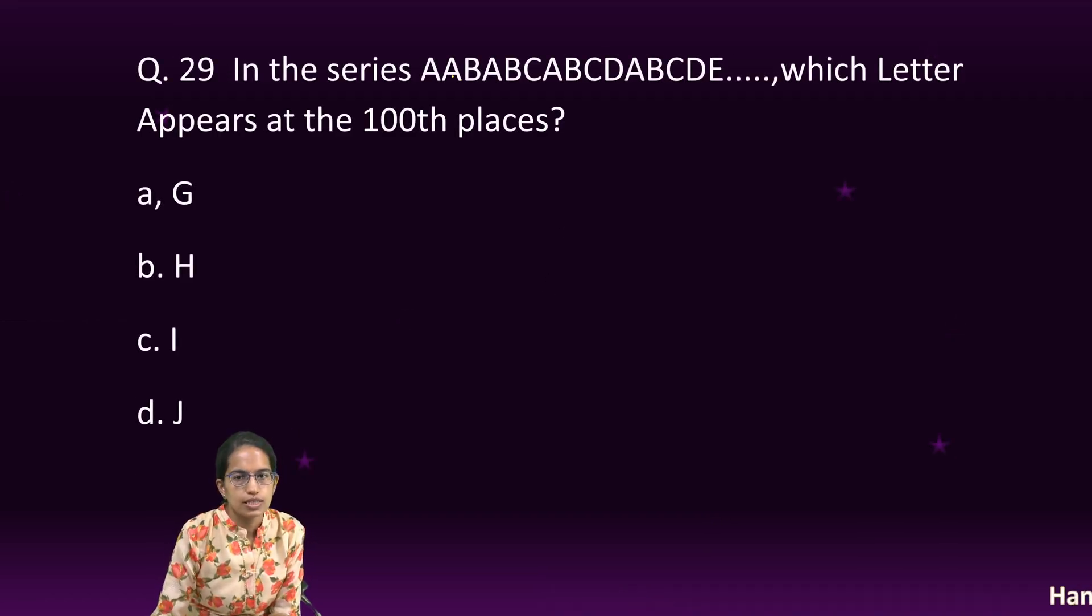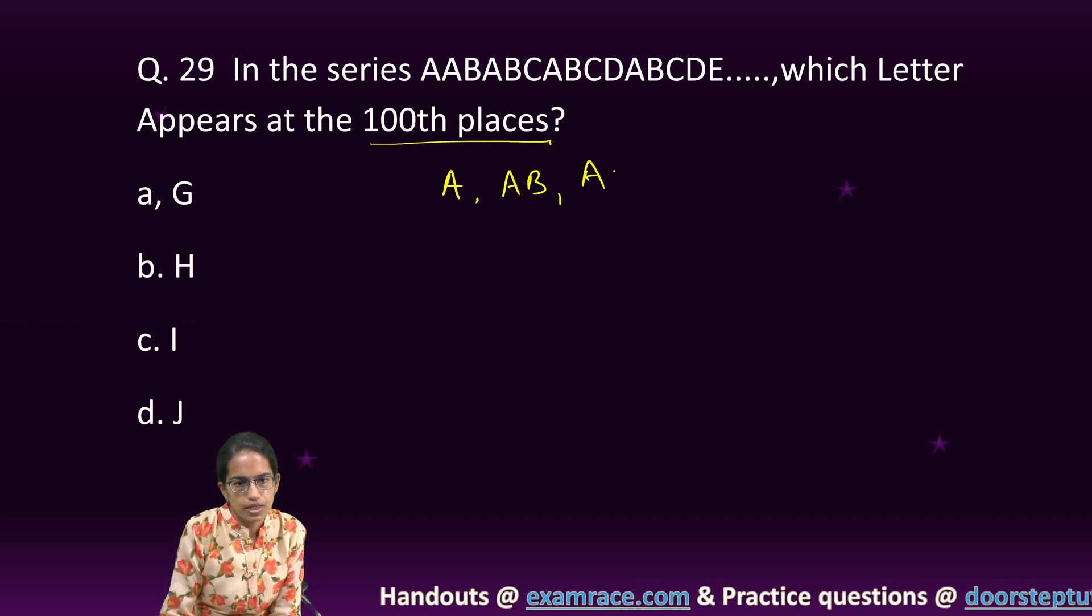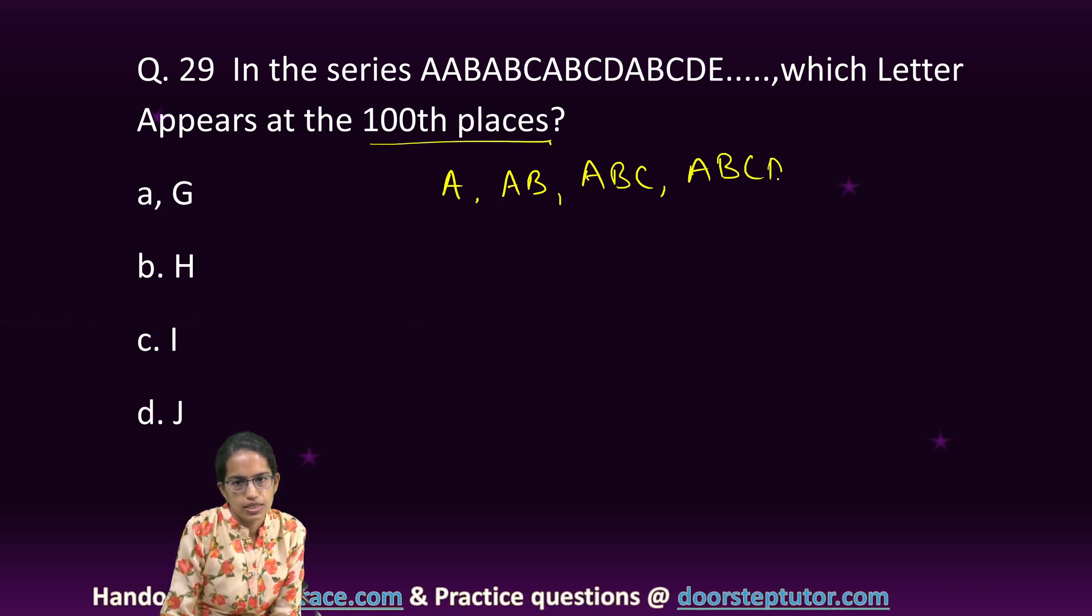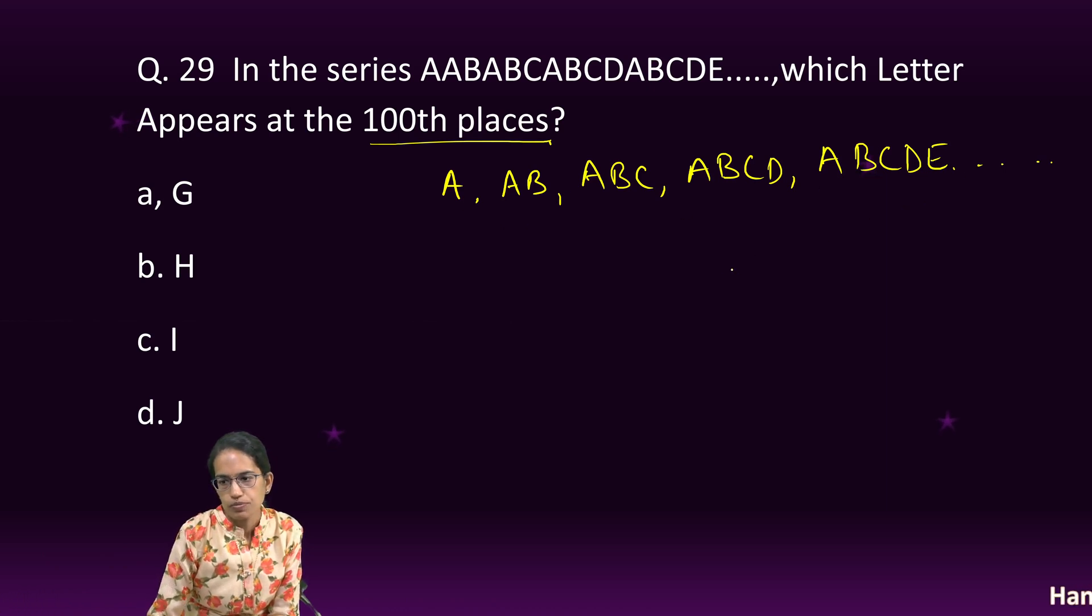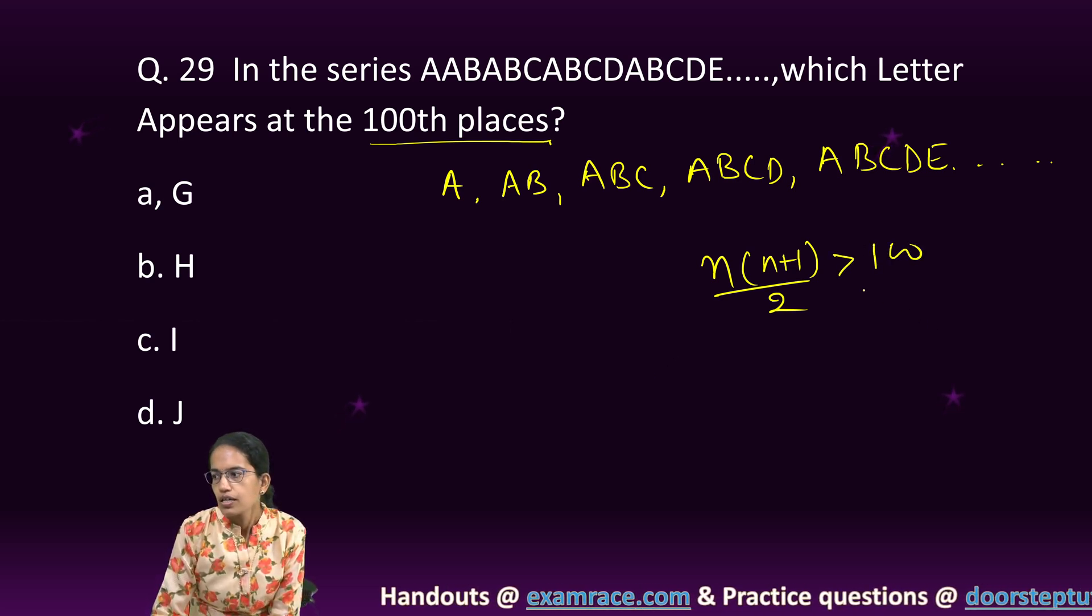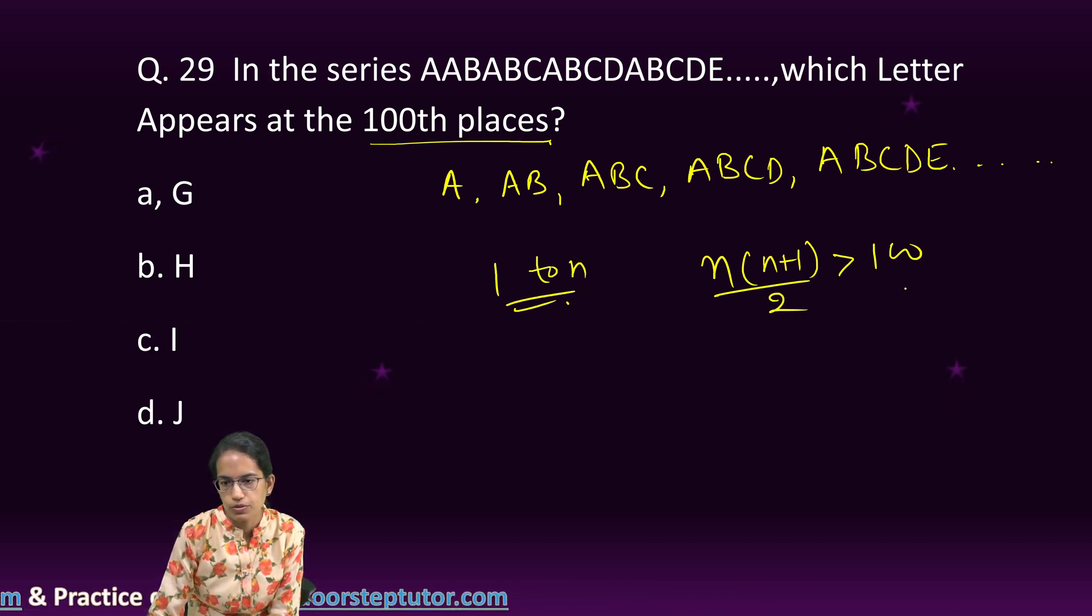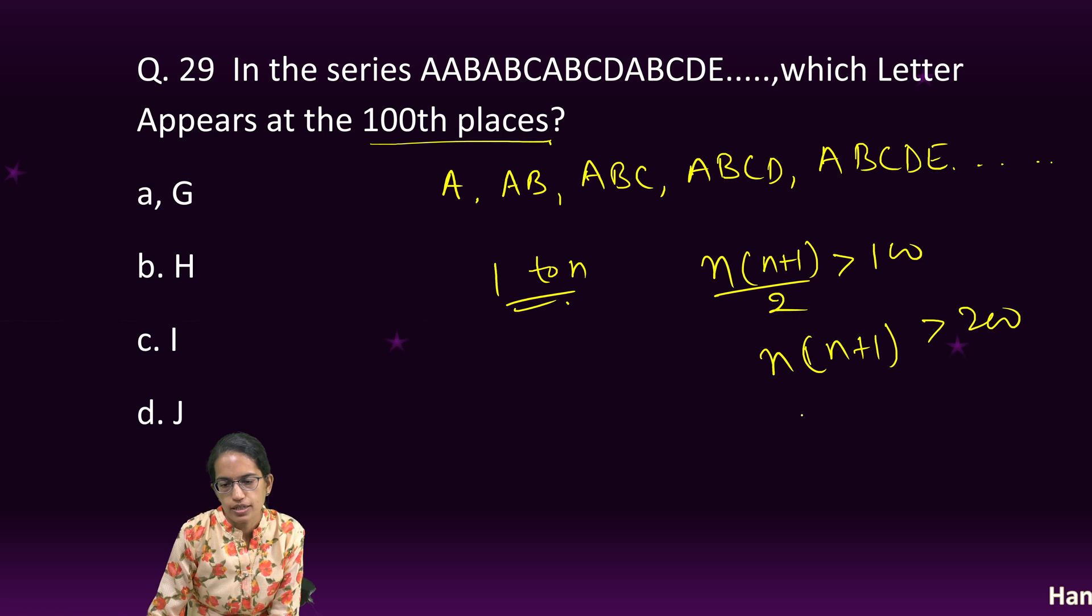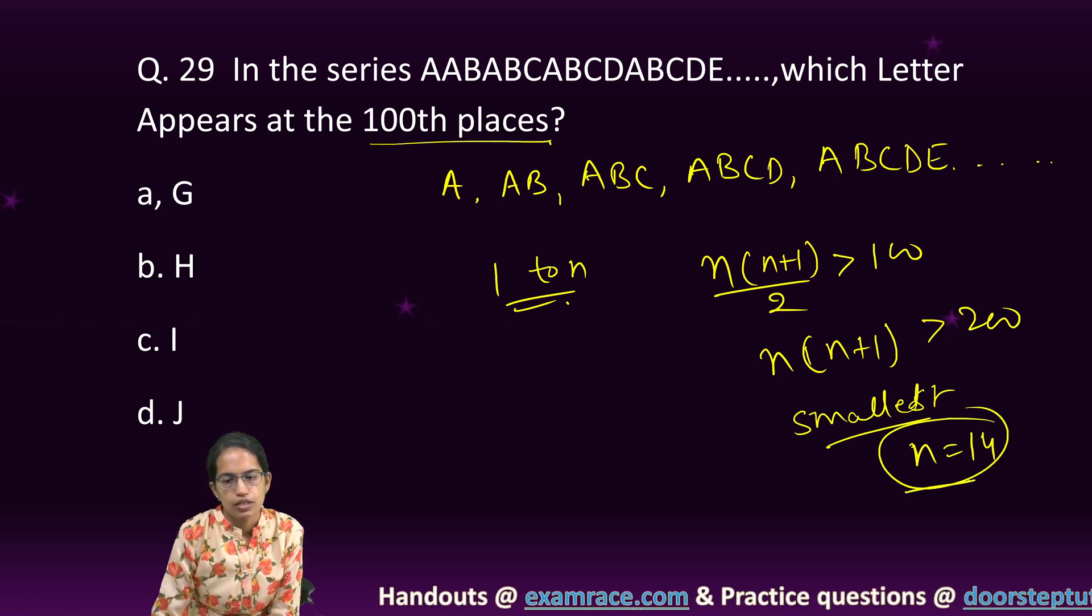The next question is, in the series, which letter appears at the 100th place? Very interesting. Understand the series. This is A, A, B, A, B, C, A, B, C, D, A, B, C, D, E, right? And so on. So, I am increasing one alphabet in each of the series. Now, how many terms should be there? It should be N into N plus 1 divided by 2 should be greater than 100. Because the sum of the numbers from 1 to N is what? N into N plus 1 divided by 2 should be greater than 100. So, N into N plus 1 should be greater than 200. The smallest N that I can get through this is how much? N is equal to 14.